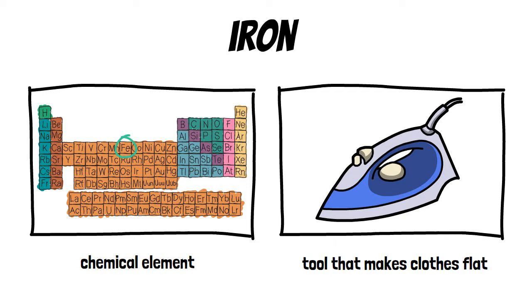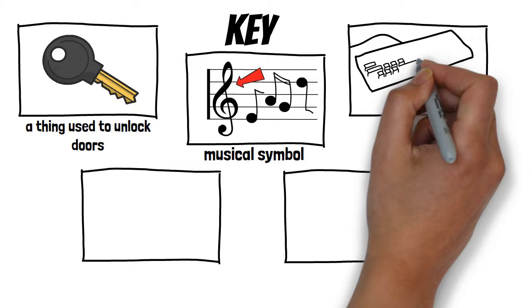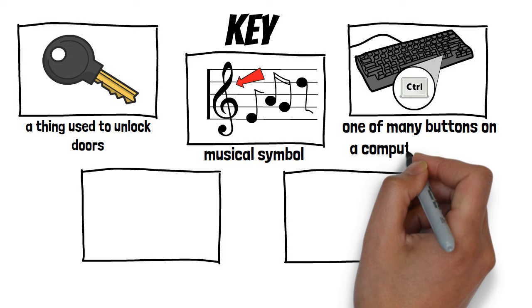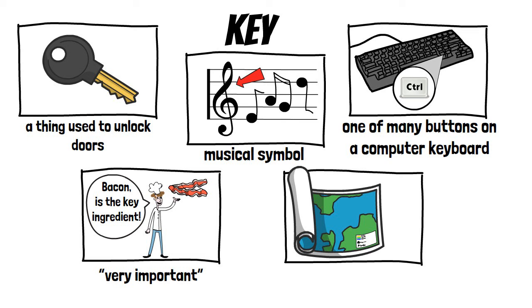Key: the first meaning is a thing used to unlock doors, the second is a musical symbol, the third is one of many buttons on a computer keyboard, the fourth means very important, and the fifth is a list of symbols with explanations used on a map.